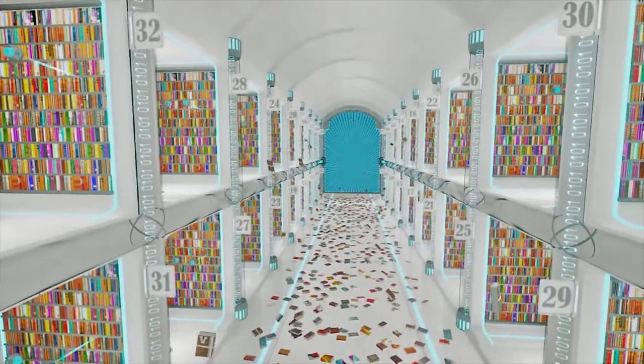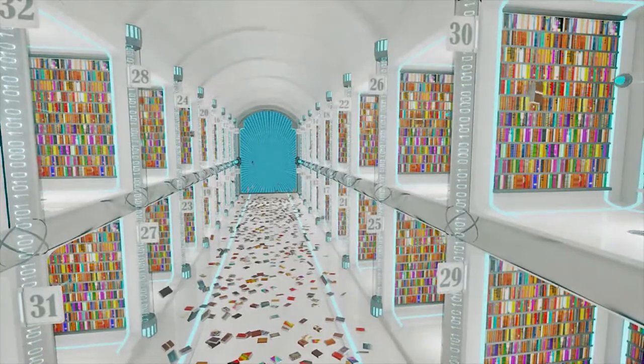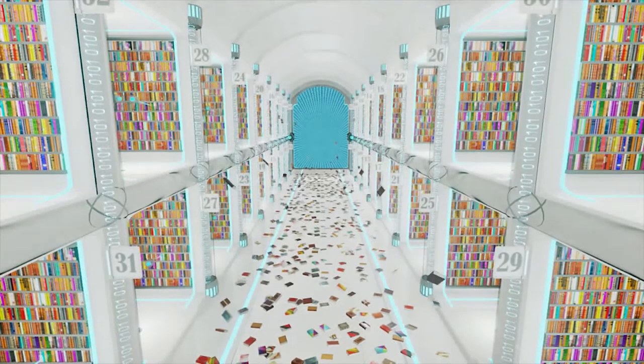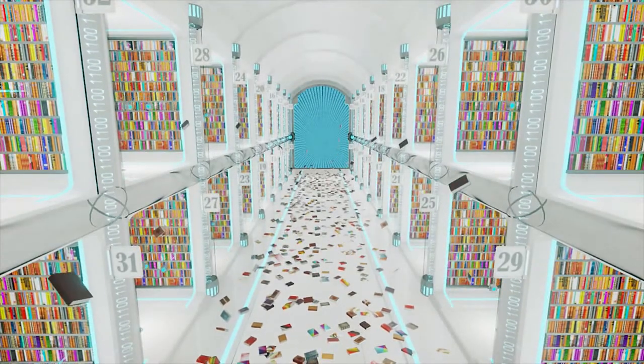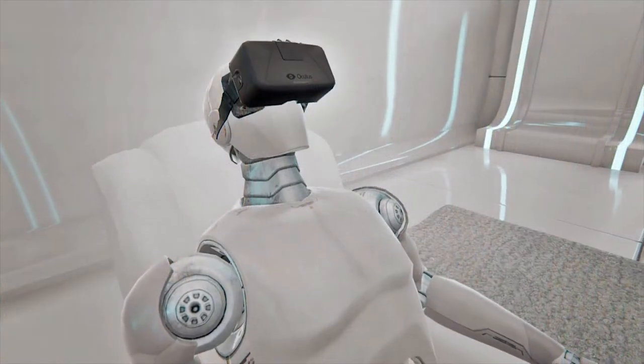As you can see, the undealt-with events connected with judgment, shame, guilt, regret or blame, resentment and pain towards others are represented by the books scattered on the library floor. During the process, these experiences are processed and archived.